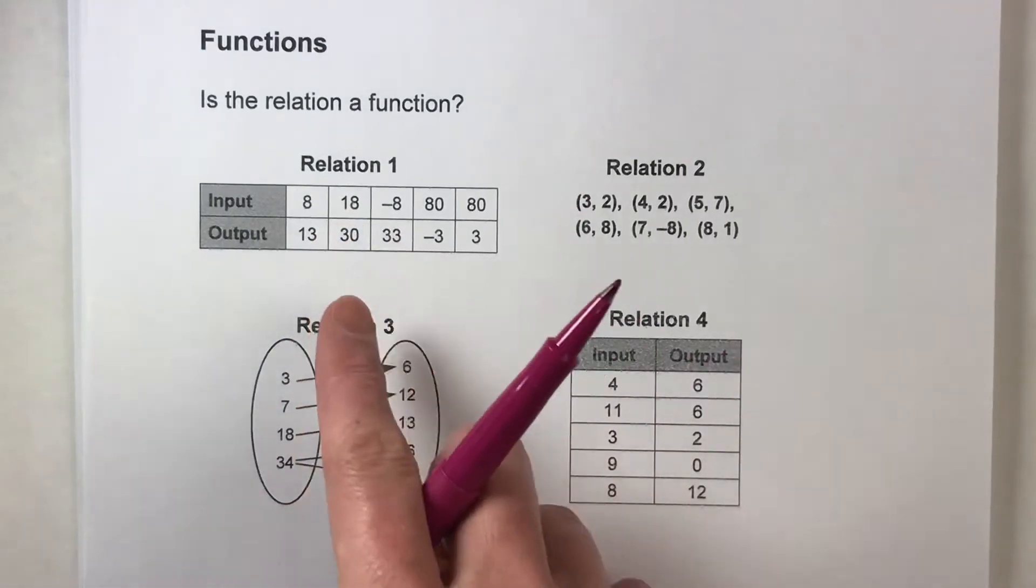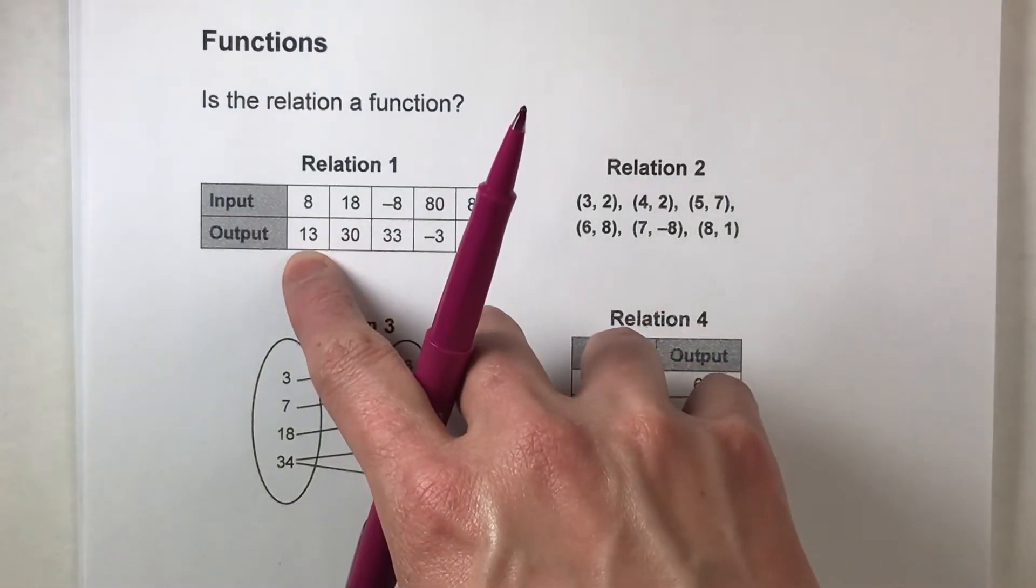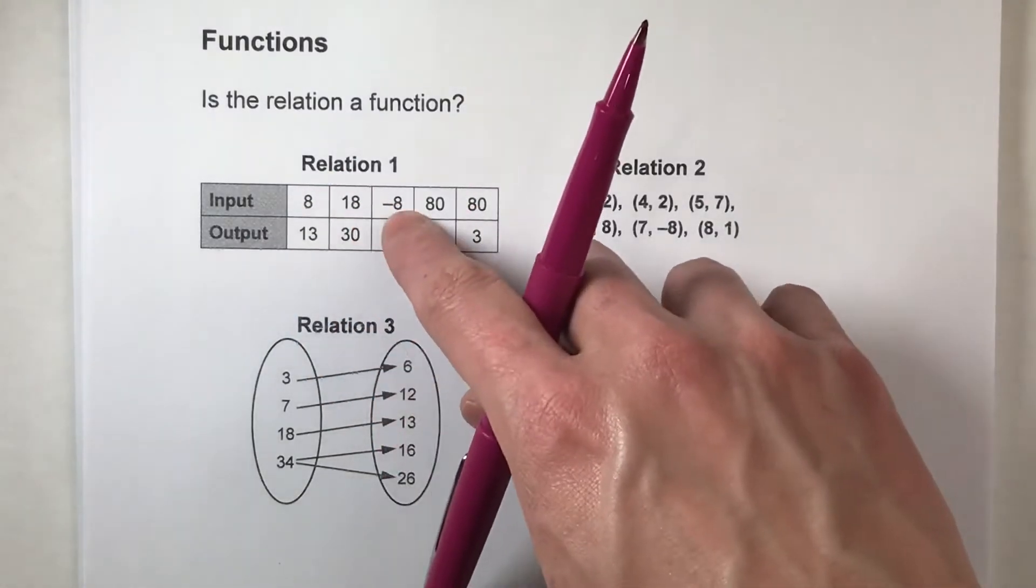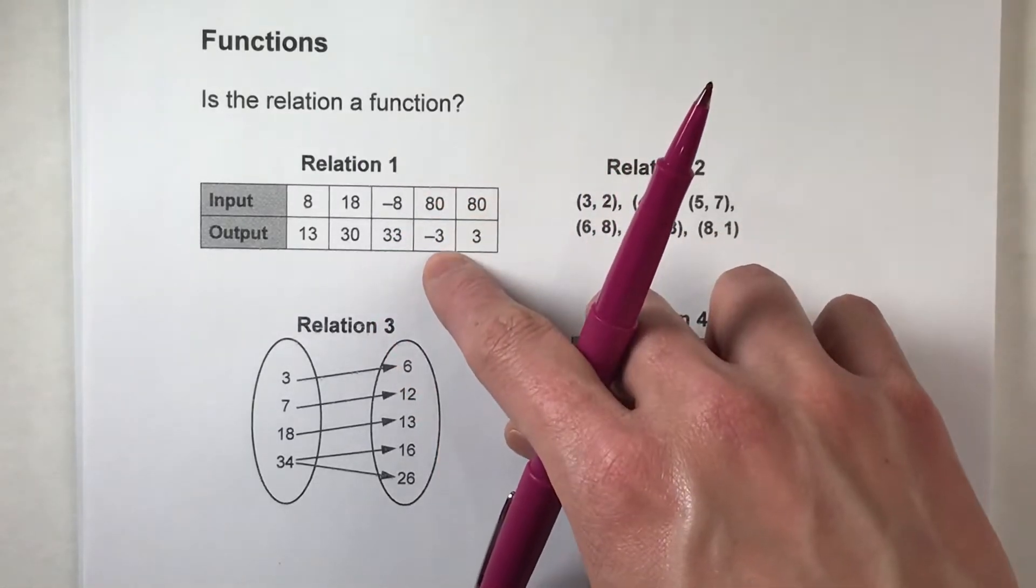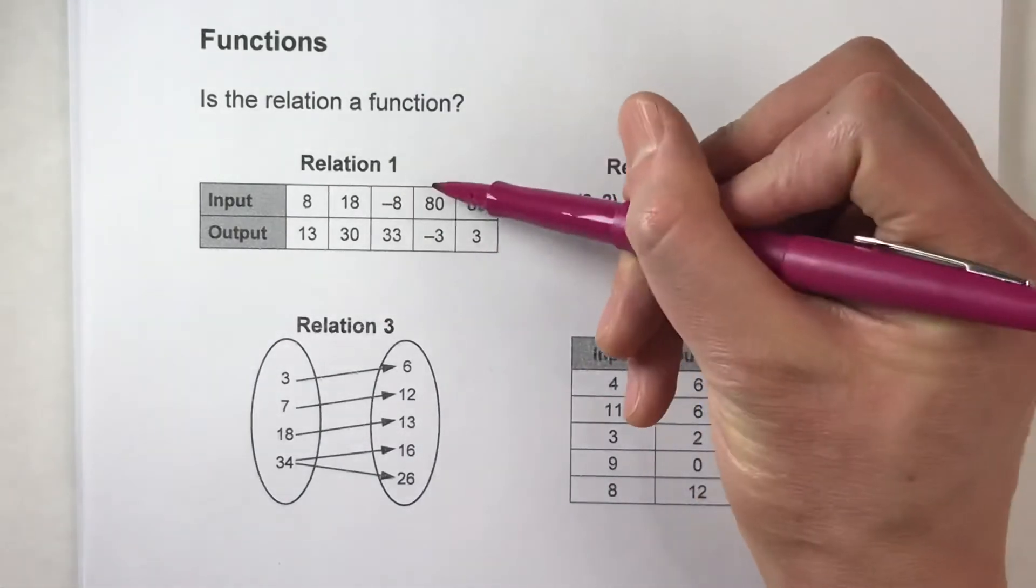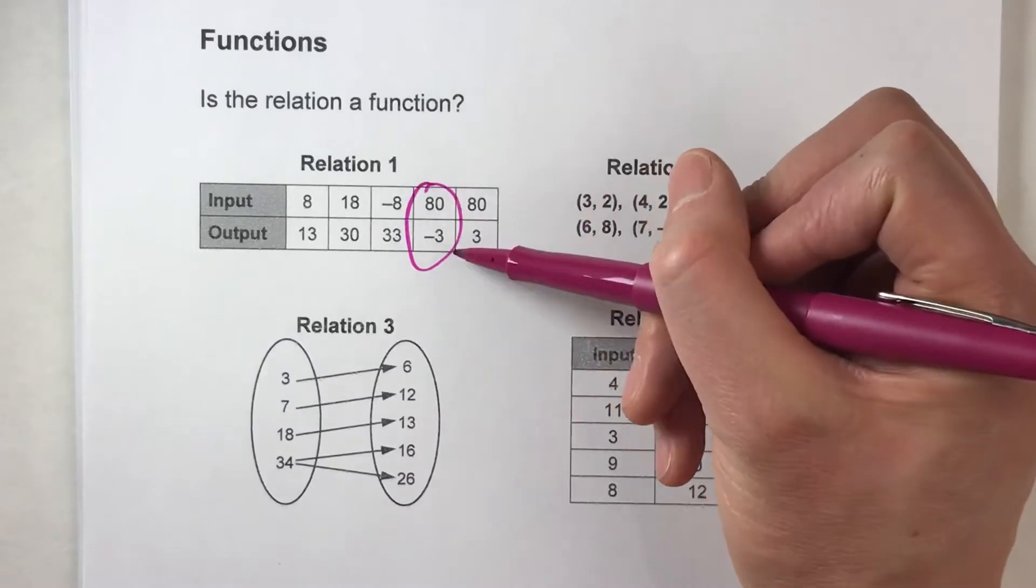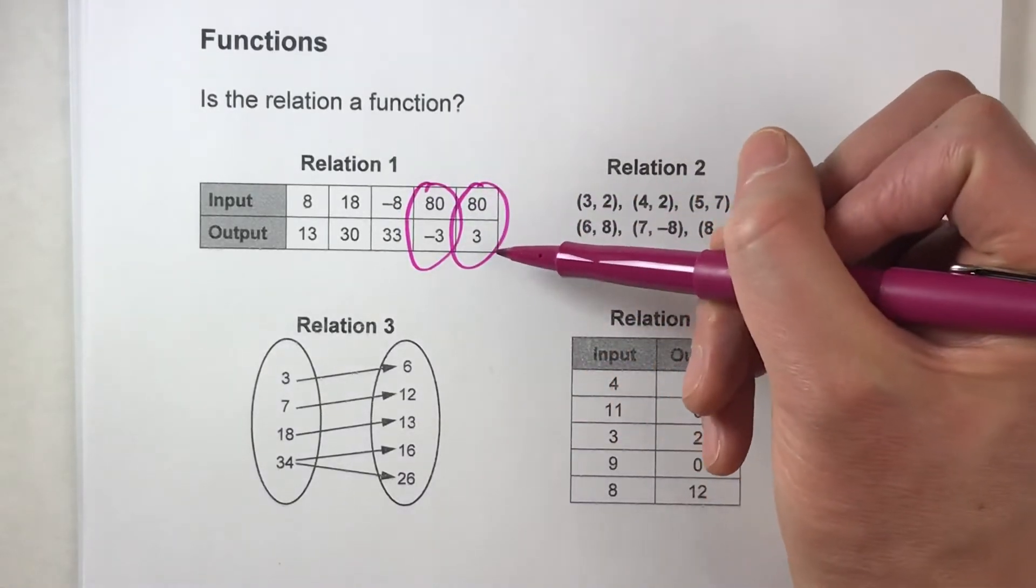Relation one, is it a function? Well an input of 8 gave us 13. An input 18 gave us 30. The input of negative 8 gave us 33. An input of 80 gave us negative 3, and then an input of 80 again gave us a positive 3. Now notice right here, if you input 80 into this relation I get negative 3, and if I input 80 again I get a positive 3.